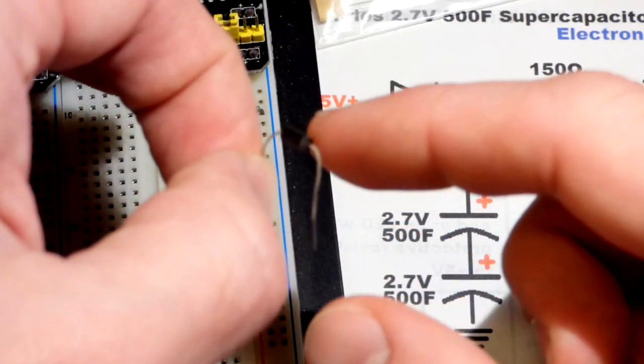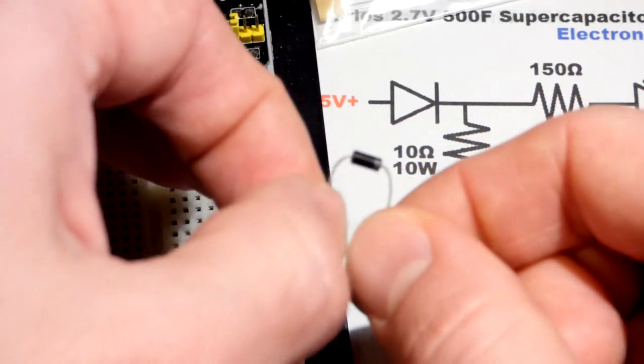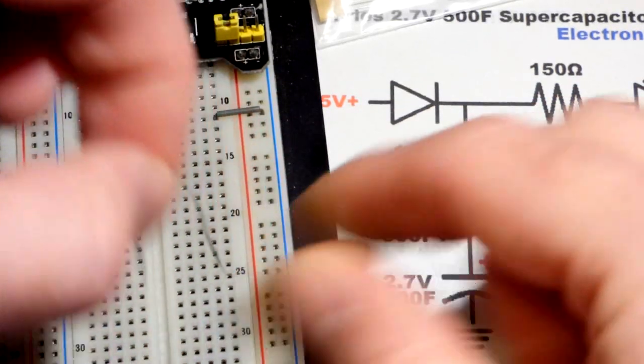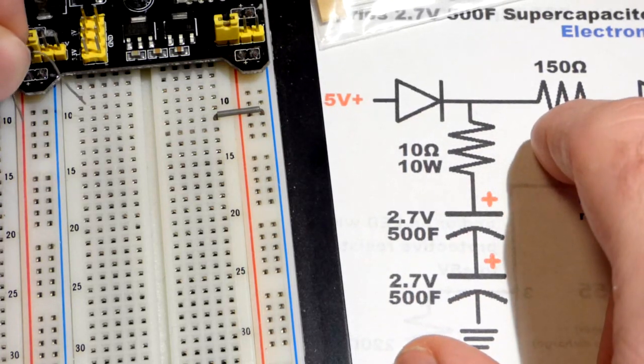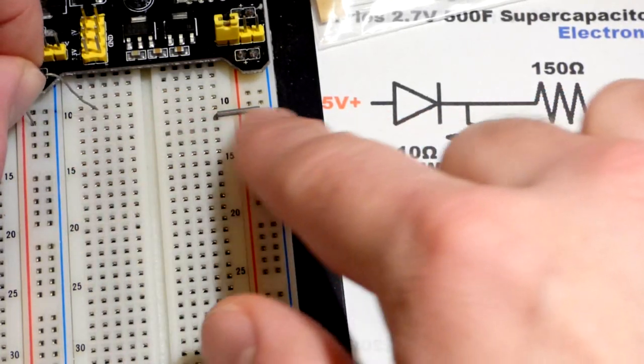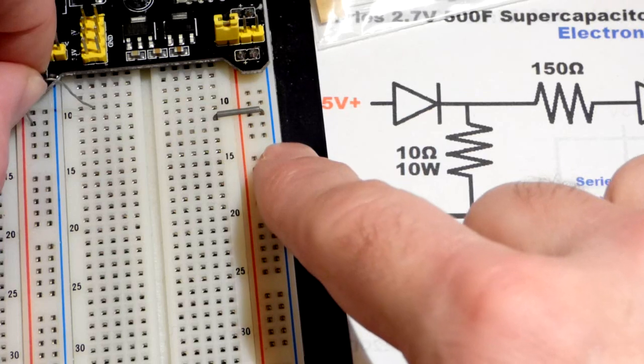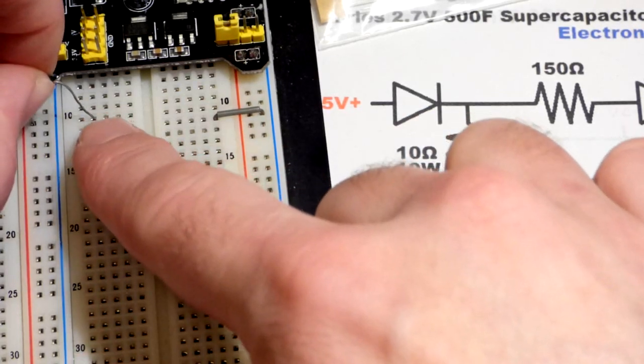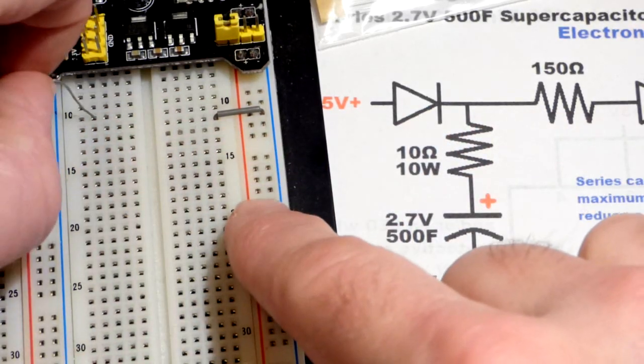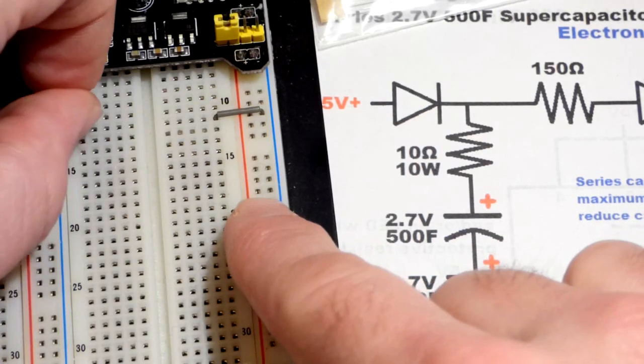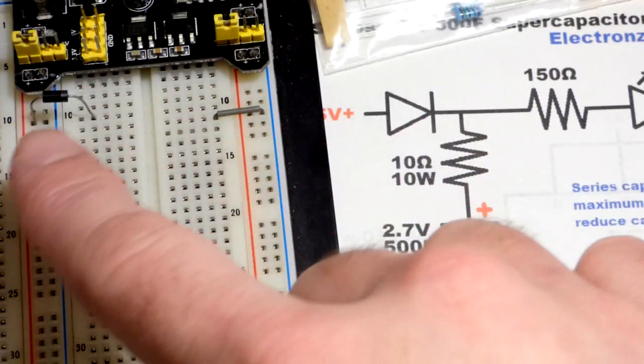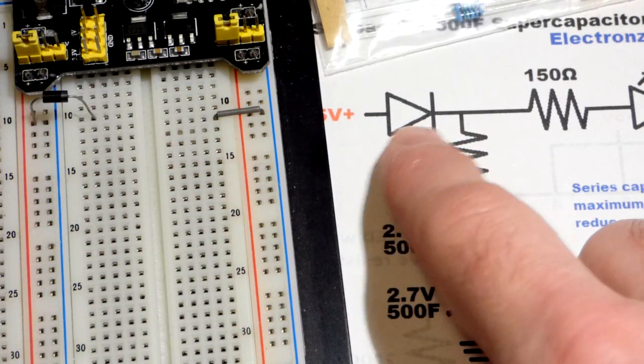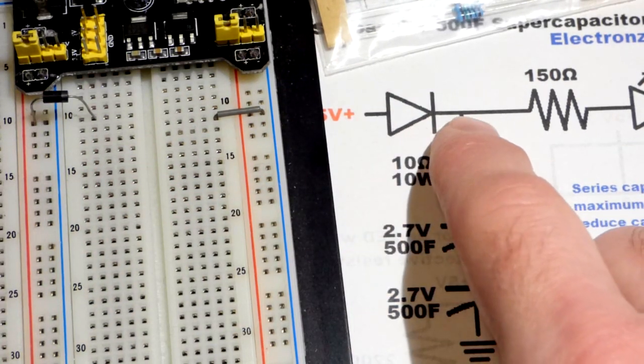We're going to forward bias this diode, so it's a rectifier diode that's going to block about 0.7 volts. There's a gray stripe right there, that's the cathode. It needs to go towards the negative side of the power supply. I'm going to try to go one row above where that jumper is.